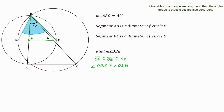Now let's label some things in this diagram. Let's call angle QBE — this tiny sliver of an angle — Y. We know that angle OBE is made up of two angles: angle OBQ and angle QBE. Since angle OBQ measures 40 degrees and QBE measures Y degrees, we can say that the measure of angle OBE is 40 plus Y. And since OBE is congruent to OEB, the measure of angle OEB is also 40 plus Y.